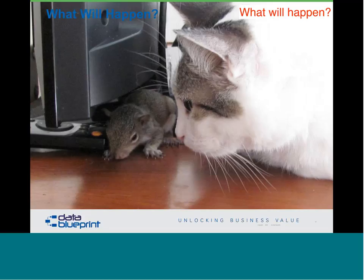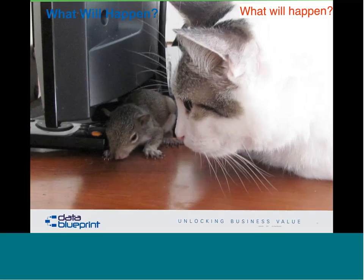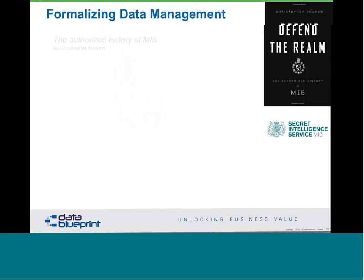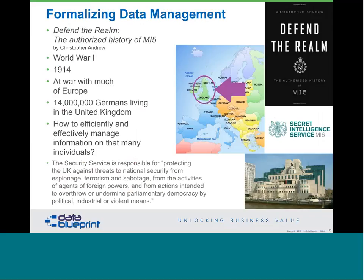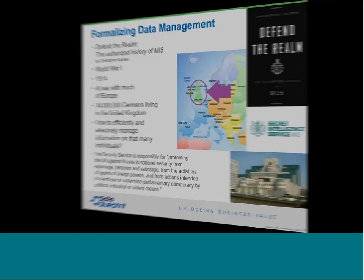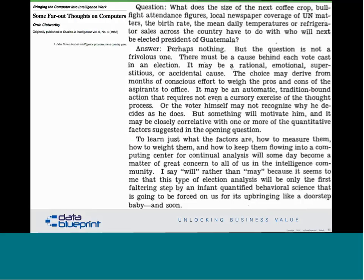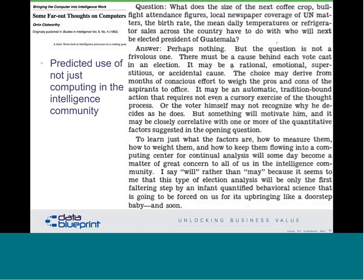Data management as a formal discipline has only been around for 101 years. The British discovered in 1914 that they were at war with much of Europe and that there were 14 million Germans living in the United Kingdom. They decided to keep a three-by-five index card with critical information on each of those 14 million Germans — managing those 14 million cards was a non-trivial exercise. The CIA published an article in Studies in Intelligence in 1962 that predicted the use of computing in the intelligence community and forecast the development of predictive analytics and the accompanying privacy challenges, including discussions of covert actions in Afghanistan.